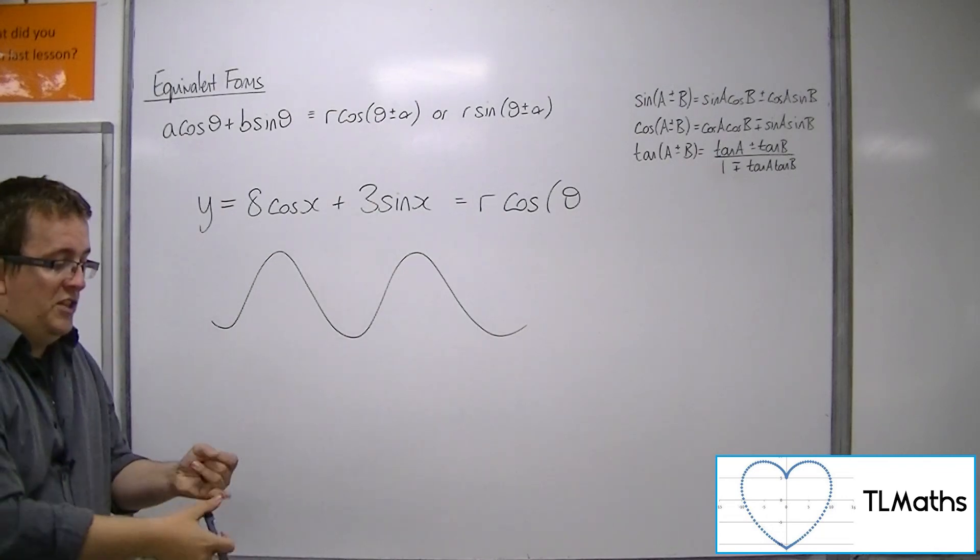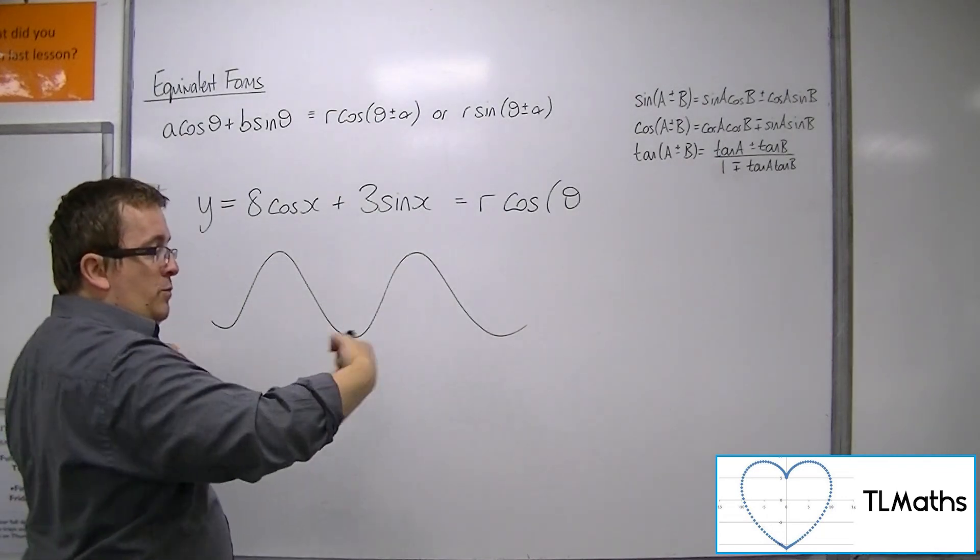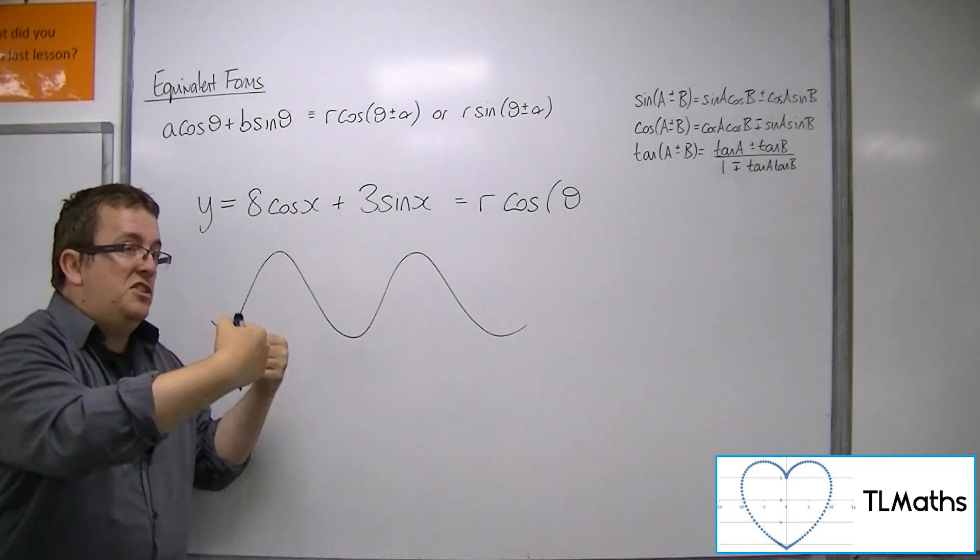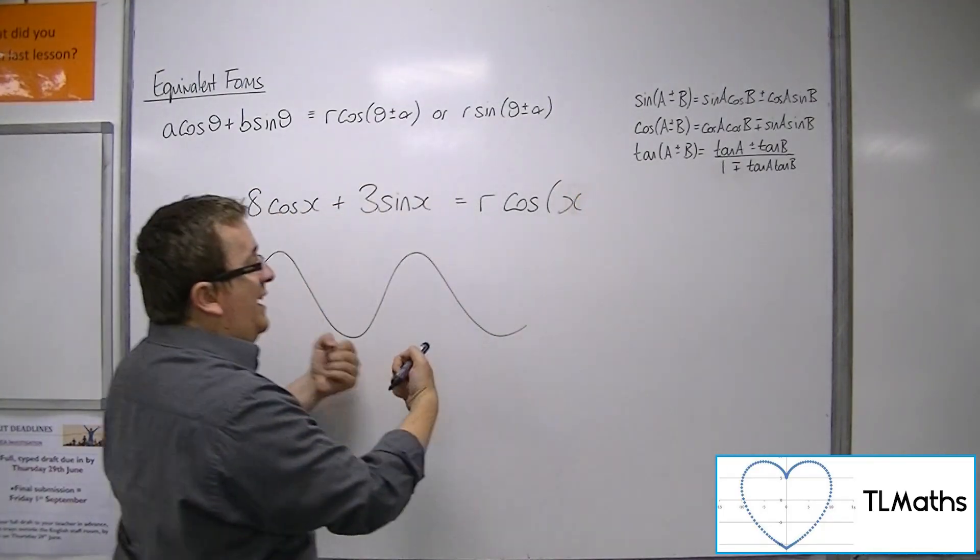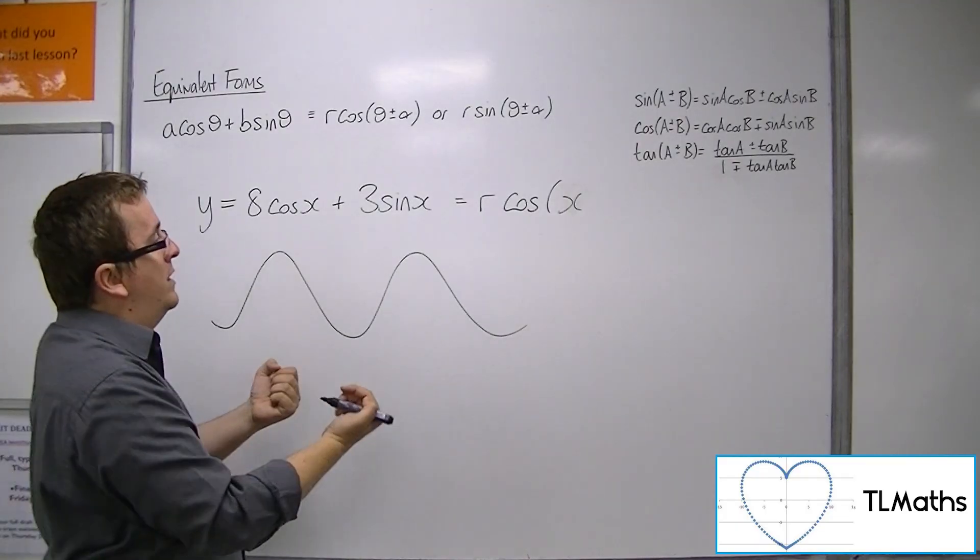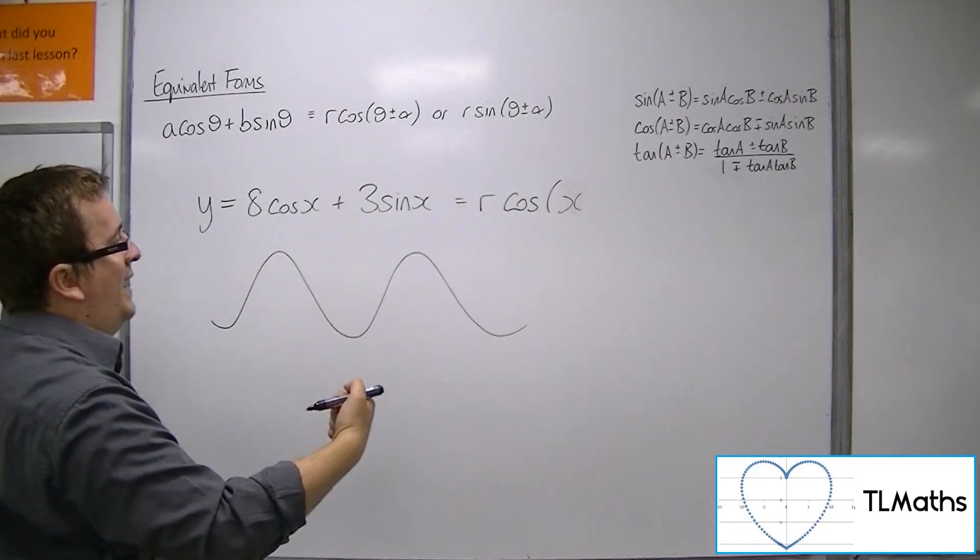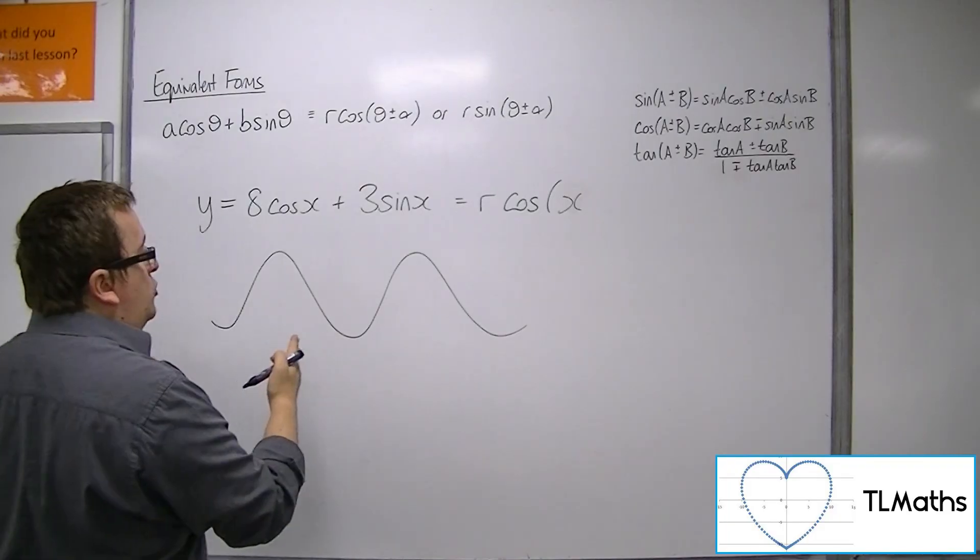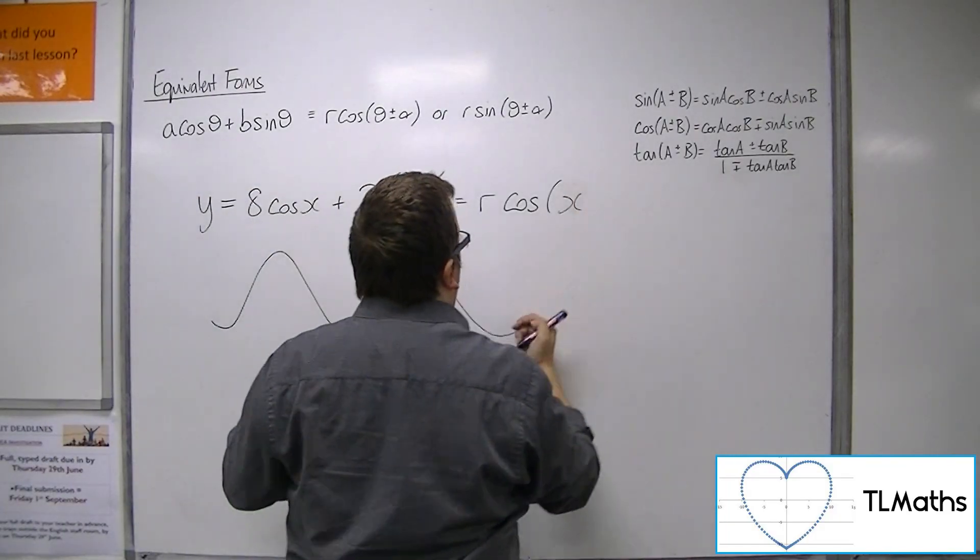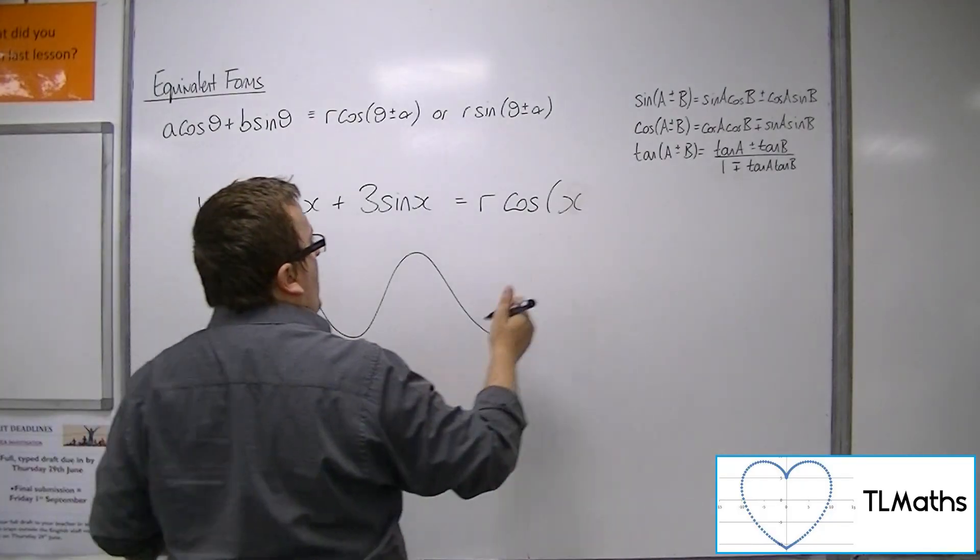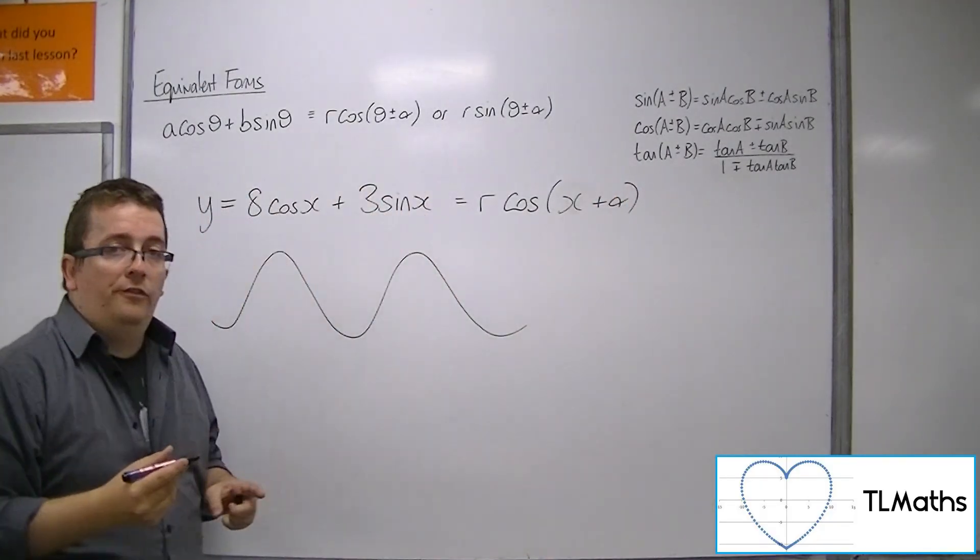Now the theta, because there's no stretch parallel to the x-axis, so it'll still be x rather, it'll still be a singular x. It's not 2x or 3x or x over 5 or anything. So there's no stretch parallel to the x-axis. But there has been a translation occurred, so either we're going to the right or to the left, by an amount of alpha.